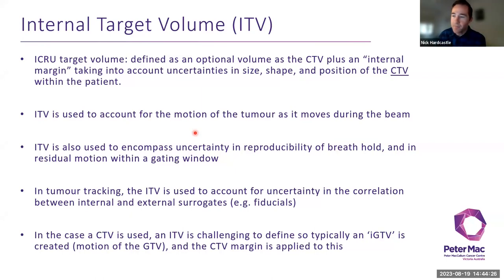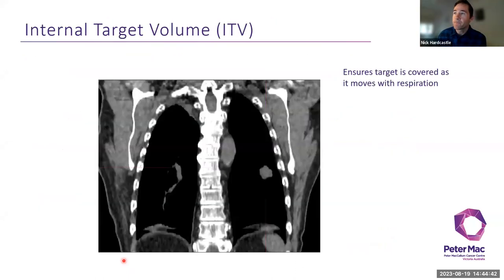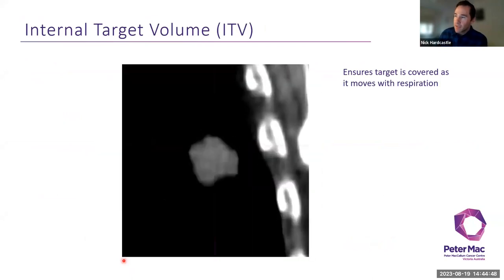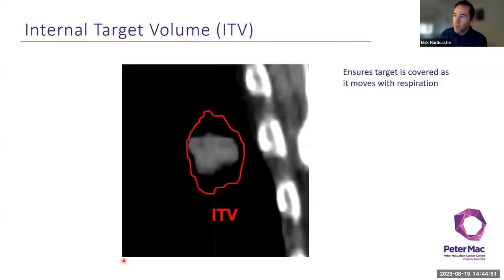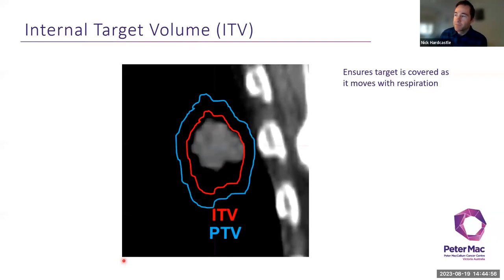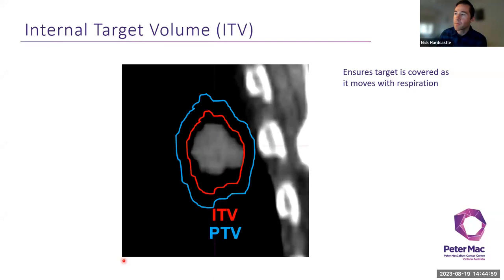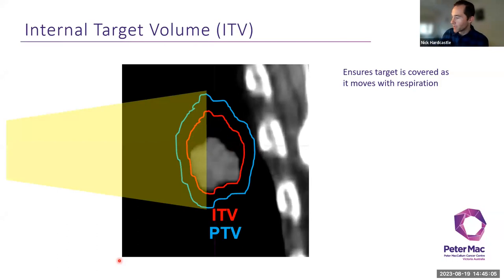In tumor tracking, the ITV accounts for uncertainty in the correlation between the tumor and whatever surrogate is used, such as a fiducial marker. When a CTV is used, an ITV can be challenging to define, so we often see an IGTV — everywhere the GTV goes through the respiratory cycle. Typically with a 4D CT, we draw an ITV covering everywhere the tumor is going with respiration, then put a PTV margin on top, so everywhere the tumor goes during respiration, we cover it with our beam.